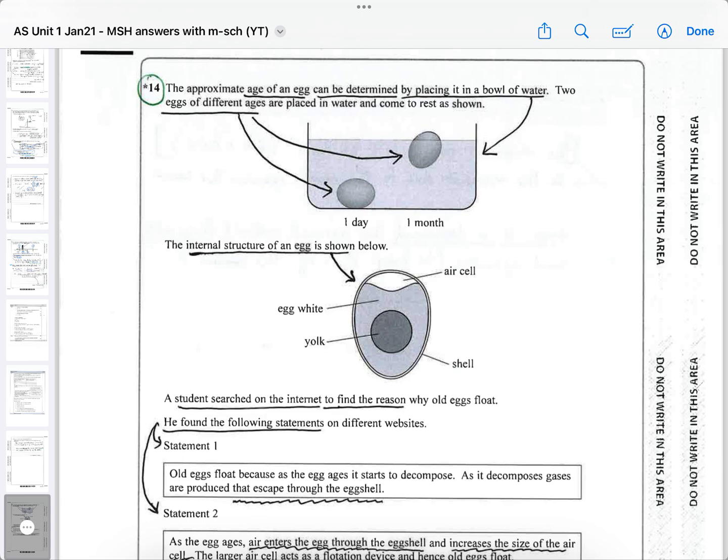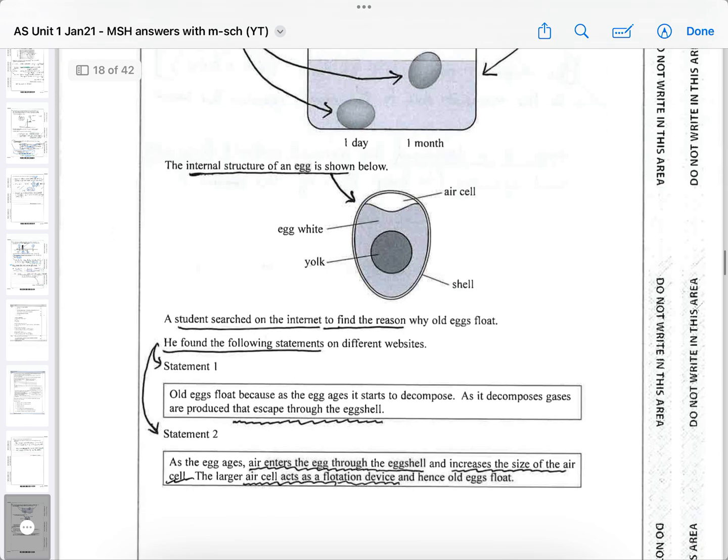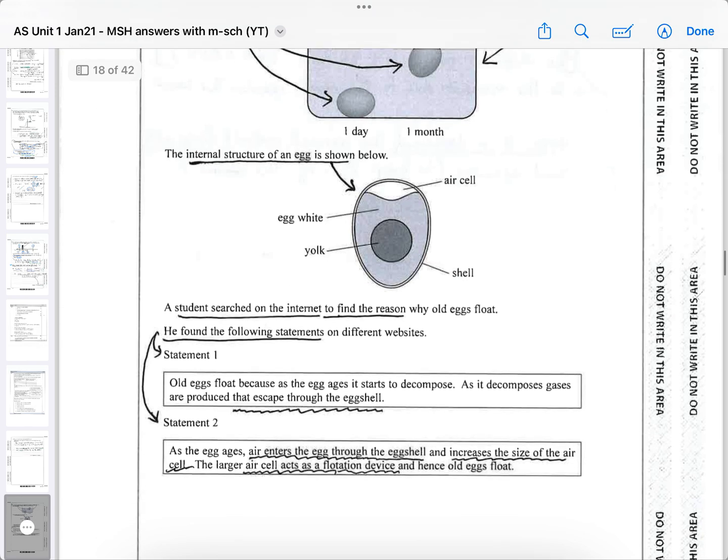Here is the quality of written communication regarding the eggs. It says the approximate age of an egg can be determined by placing it in a bowl of water. Two eggs of different ages are placed in water and come to rest as shown. And you can actually do this. So old eggs will float. The question is why? They want you to analyze the physics behind it. The internal structure of an egg is shown, so it looks like there's always an air cell at the one end of the egg.